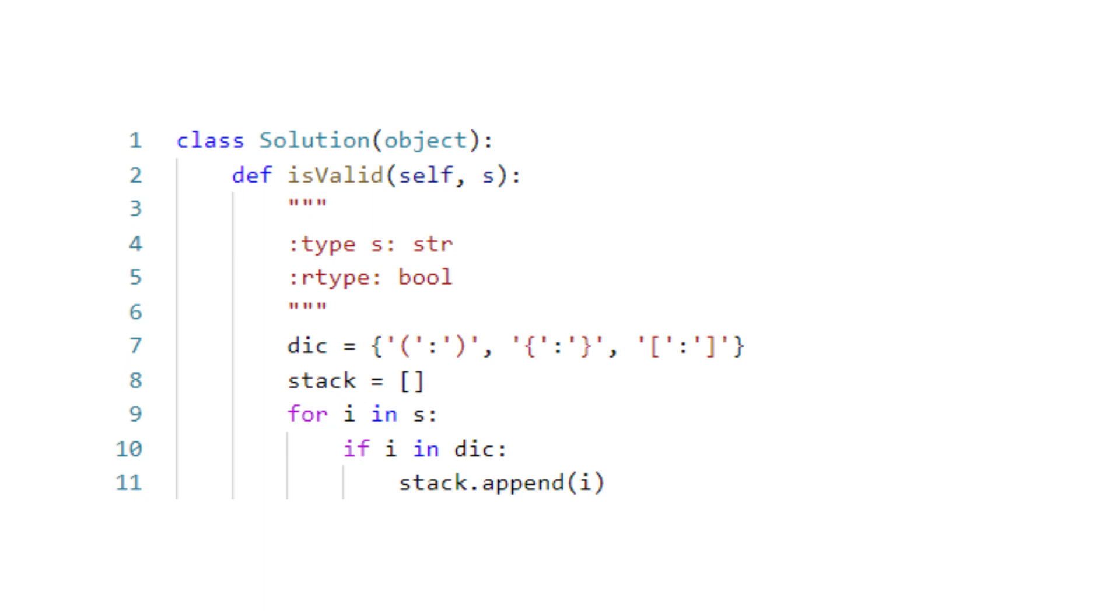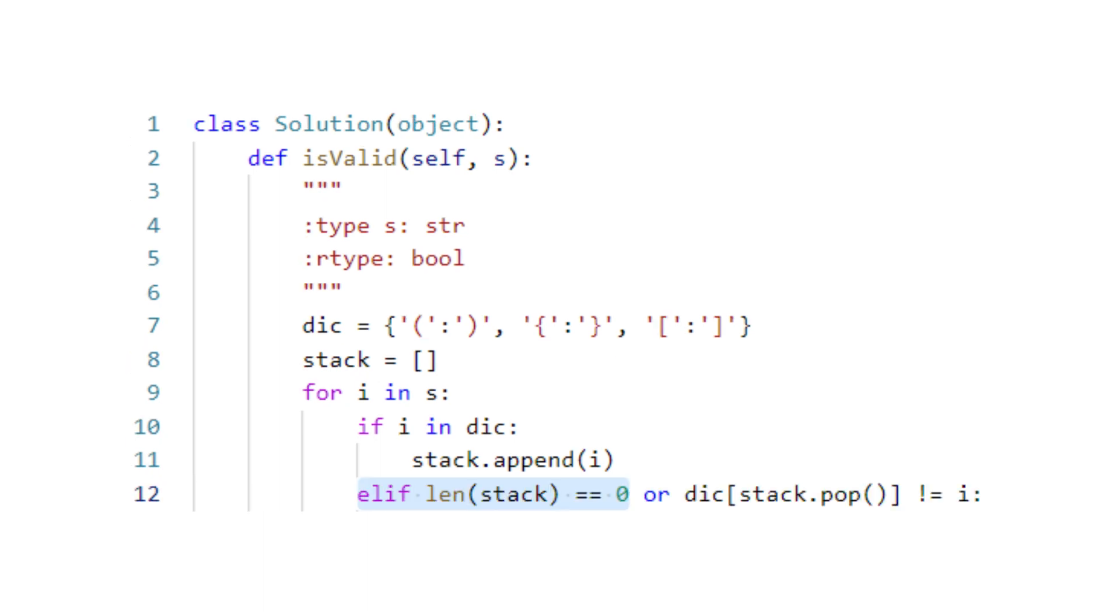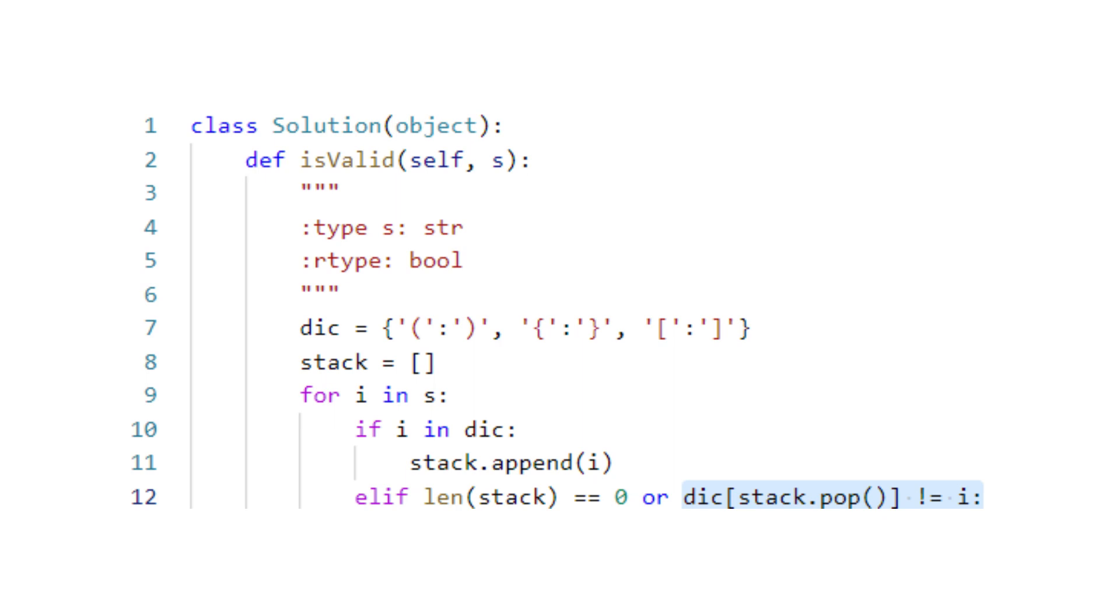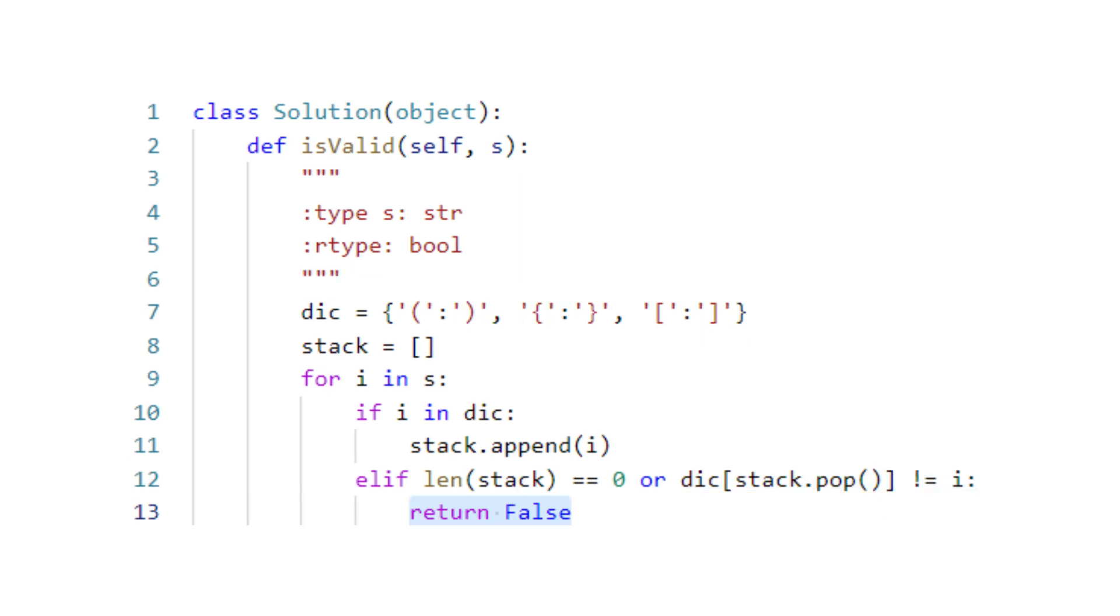If the current character is not a dictionary key, then it must be a closing bracket. If the stack is empty or the corresponding dictionary value of the top element from the stack does not match the current character, we know that the input string is invalid.